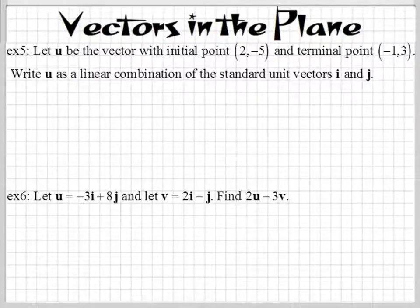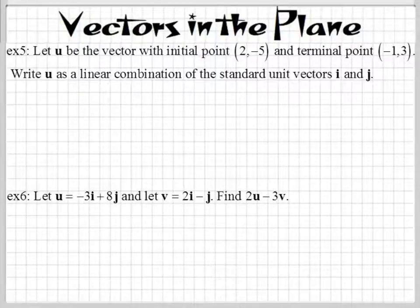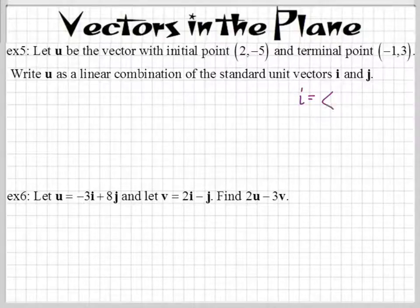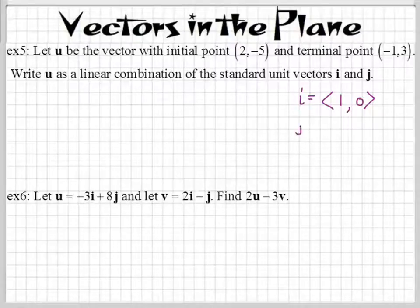You guys know what the standard unit vectors are now, right? I is 1, 0 — that's correct. And what is j? 0, 1. That is 0, 1.